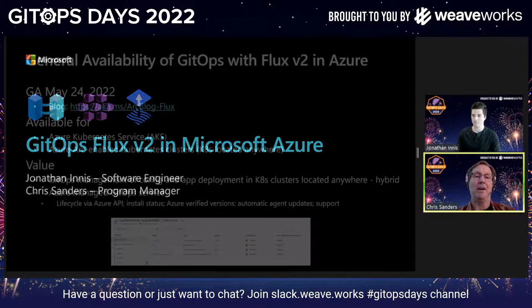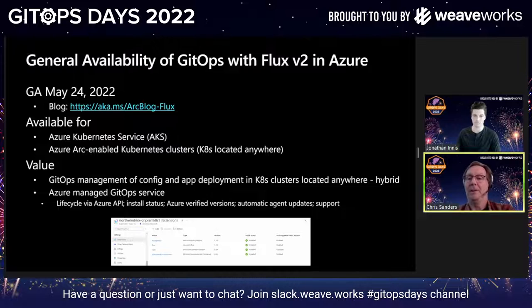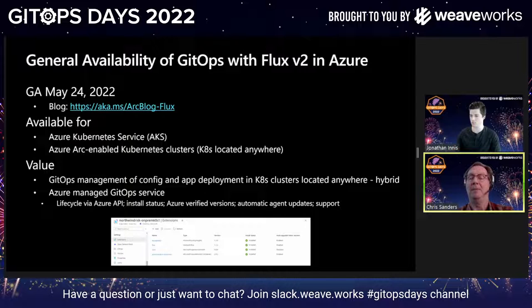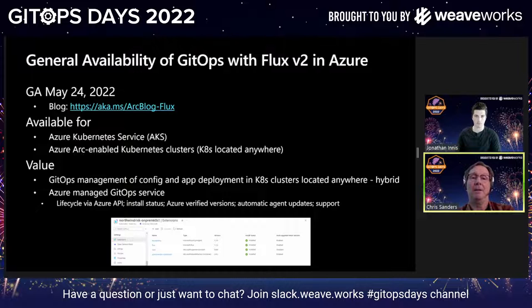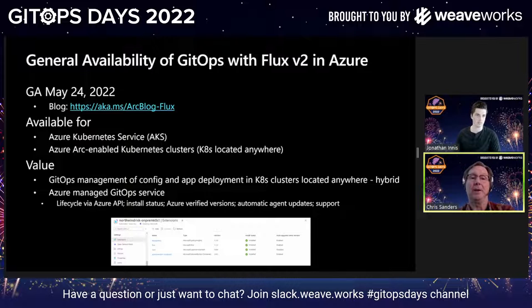What we want to talk about today is our recent release of Flux v2 in Azure. About a year ago we released Flux v1 with Azure Arc enabled Kubernetes, and immediately started working on integrating Flux v2. We went to general availability with Flux v2 just a couple weeks ago on May 24th — and for the first time it's available in Azure Kubernetes Service.